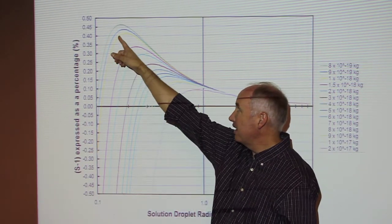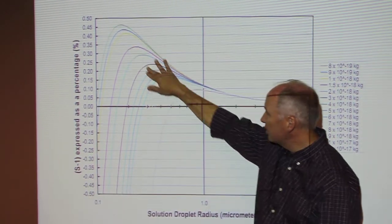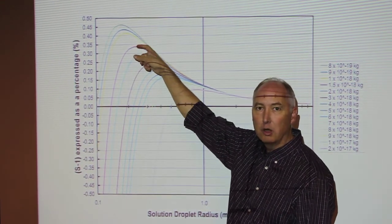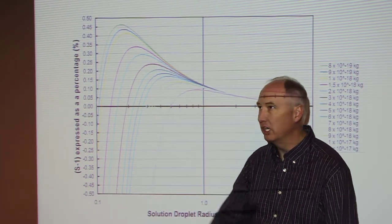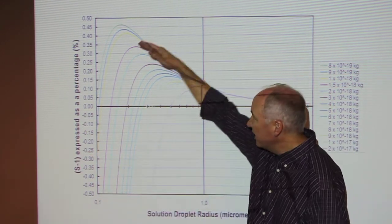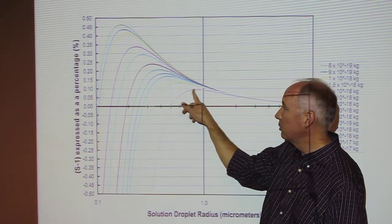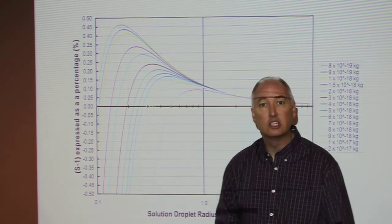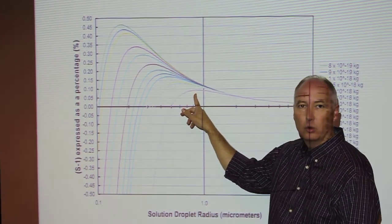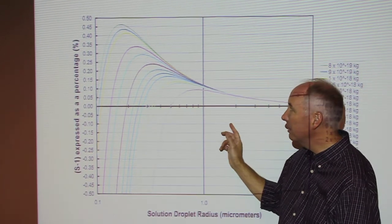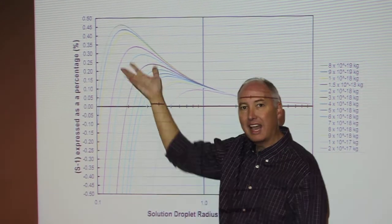As particles get bigger, the curves shift such that the critical supersaturation gets smaller and the critical radius gets larger. This is a function of the larger the mass of the solute, the smaller the barrier for cloud droplet activation. Therefore, the largest particles are most likely to act as cloud condensation nuclei. For example, for the largest particle, you only need 100.1% relative humidity to activate it into a cloud droplet, but for the smallest particle, you need almost 100.5% relative humidity.